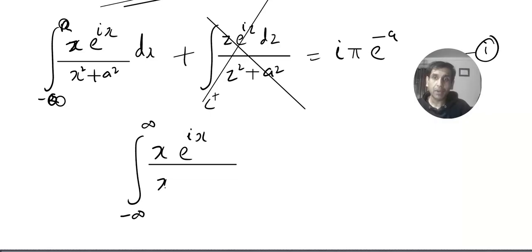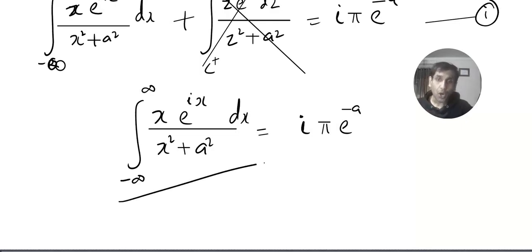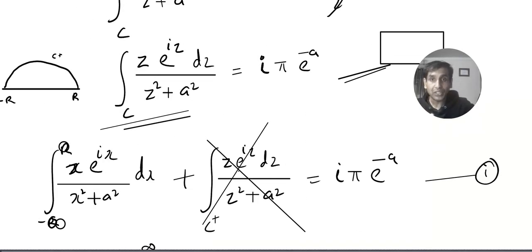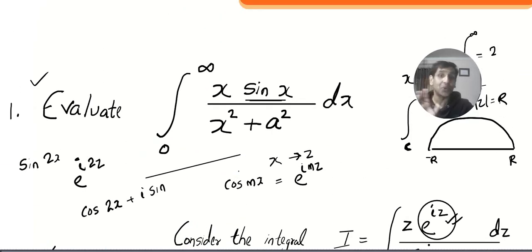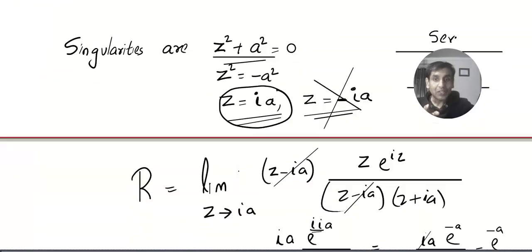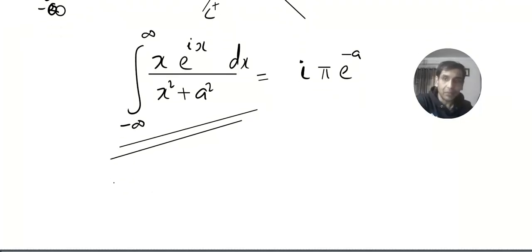So when R tends to infinity, according to Jordan's lemma this will vanish, and when R tends to infinity this will become -∞ to ∞. What I found is ∫_{-∞}^∞ xe^(ix)/(x² + a²) dx equals iπe^(-a). Don't be very happy because this is not the question that they asked me to solve. Did they ask me to solve this? No. They asked me to solve something with sine or cos. It's not a big deal. What is e^(iθ) ?